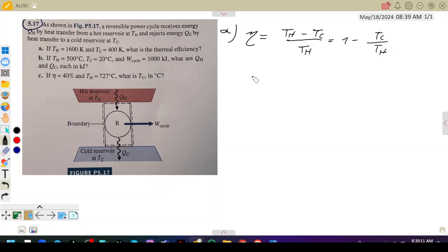For τ, that would be equal to 1 minus 400 divided by 1600. Let's calculate this. So 1 minus 400 divided by 1600 is 0.75, which is equal to 75 percent.